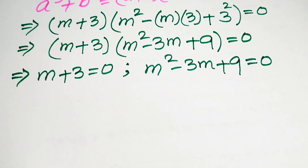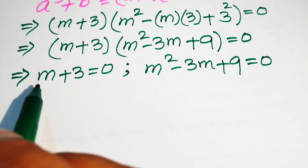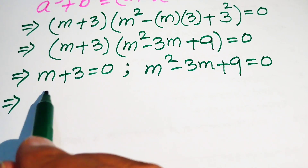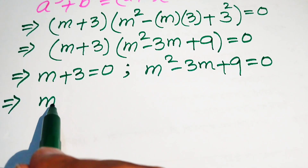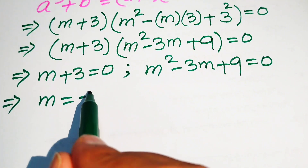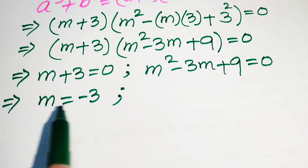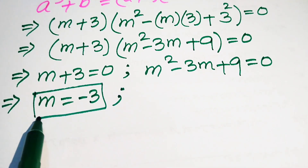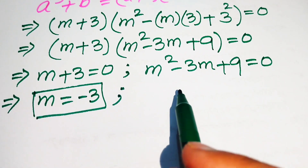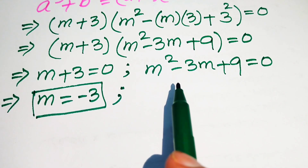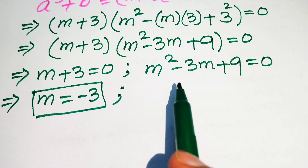Focusing on Case 1: we move the plus 3 to the right hand side and get m equals minus 3. This is our first root.